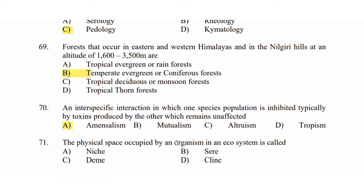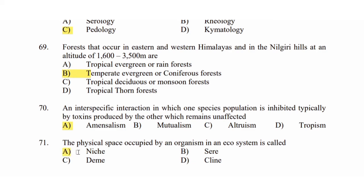Question 71: The physical space occupied by an organism in an ecosystem is called — Option A: niche. Option B: seer. Option C: demi. Option D: clime. If an organism occupies a physical space, the answer is Option A: niche.